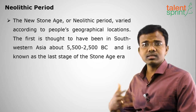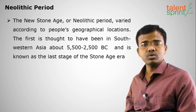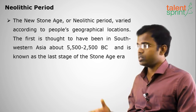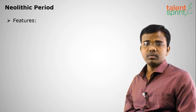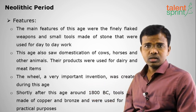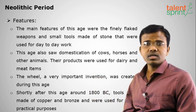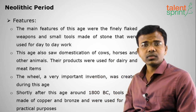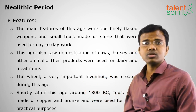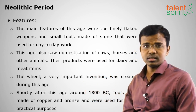The last stone age period is Neolithic. 'Neo' means new and 'lithos' means stone — so New Stone Age. It dates from 5500 BC to 2500 BCE. After gathering food through hunting and then developing farming, Neolithic man began the domestication of various animals such as cows and horses for food generation.